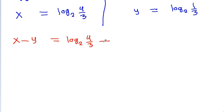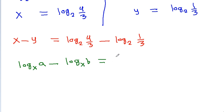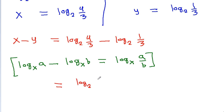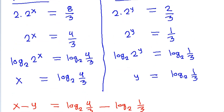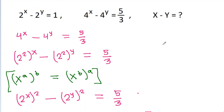And we have to find the value of x minus y. x is log base 2 of 4 by 3 minus y is log base 2 of 1 by 3. And log base x of a minus log base x of b is equal to log base x of a by b. So this will be equal to log base 2 of 4 by 3 divided by 1 by 3, and 3 will cancel, so it is equal to log base 2 of 4, and 4 is 2 square, so that will be equal to 2.